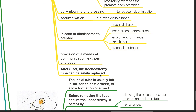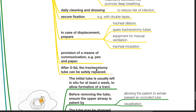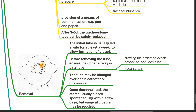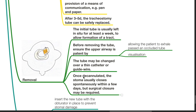After three to five days, the tracheostomy tube can be safely replaced. Regarding removal of the tracheostomy tube: the initial tube is usually left in situ for at least a week to allow formation of a tract. Before removing the tube, ensure the upper airway is patent by allowing the patient to exhale past the occluded tube. The tube may be changed over a thin catheter or guide wire. Once decannulated, the stoma usually closes spontaneously within a few days, but surgical closure may be required.